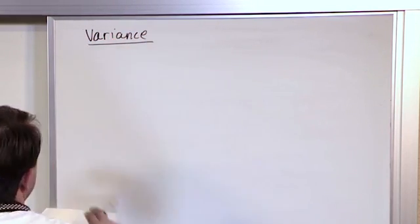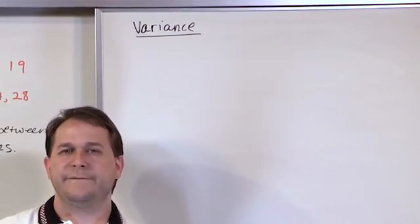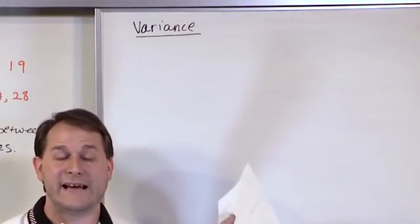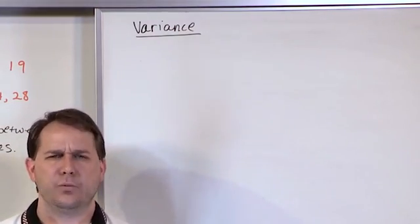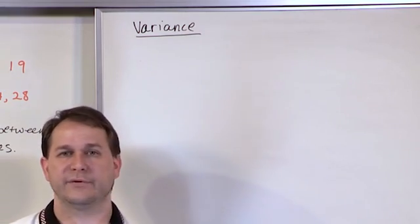That's the concept of variance. Alright, so we've done the range, we figured out how to do that. Now we're going to try to calculate something called the variance, which is going to tell us how spread apart the data is in a way that's not quite as susceptible to outliers.